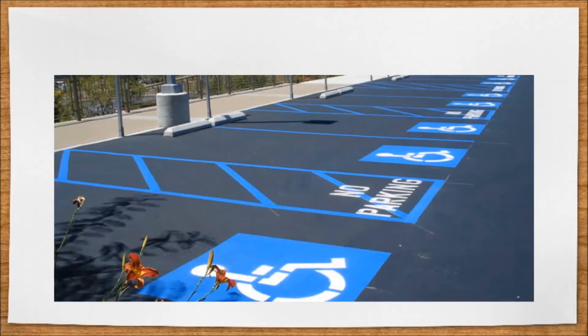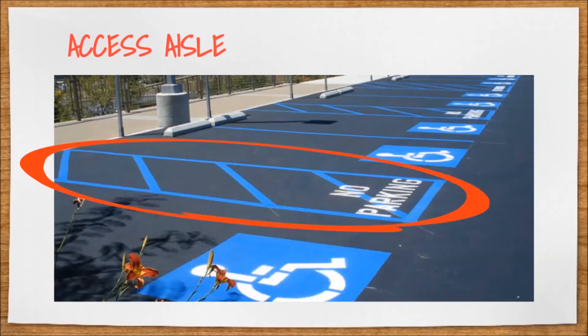Handicapped parking spaces must have a level access aisle, the striped area that you see, on one side of the parking space. The access aisle must be at least 48 inches wide, but a full 5 feet is preferred.